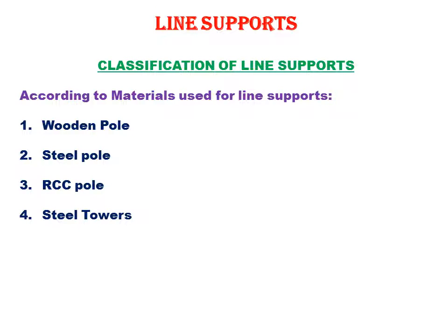Good morning. Today we will see the fourth topic of our fifth chapter, that is line supports. Line support means to place the conductor, insulator, and other material. There is a classification of line supports according to their material: first is wooden pole, second is steel pole, third is RCC pole, and fourth is steel tower.